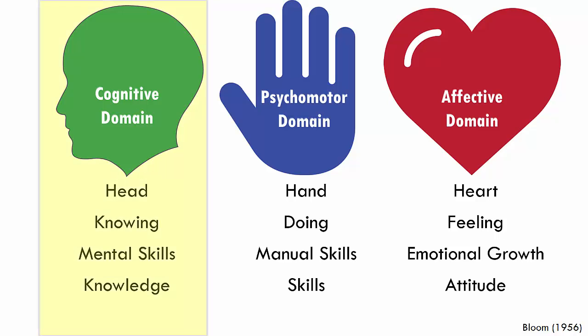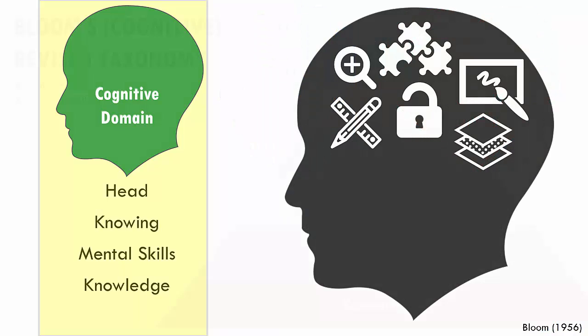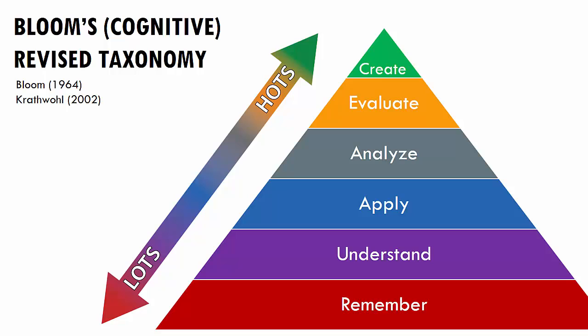In this presentation we will focus on the cognitive domain. Bloom's Taxonomy is often represented in a pyramid structure with the lower order thinking at the bottom and the higher order thinking towards the top, building from remember to understand, apply, analyze, evaluate, and create. And we'll go through each one of them one by one.